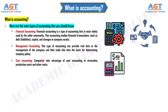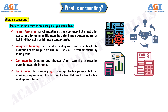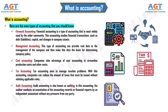Cost Accounting: companies take advantage of cost accounting to streamline production costs and other costs. Tax Accounting aims to manage taxation problems. With this accounting, companies can reduce the amount of taxes that must be issued without violating applicable rules. Audit Accounting, also known as auditing, involves an auditor conducting an examination of the accounting records or financial reports by an independent accountant without any pressure from any party.